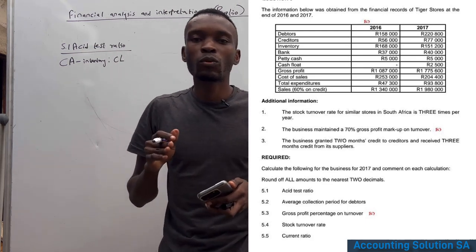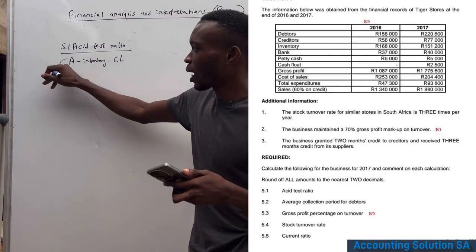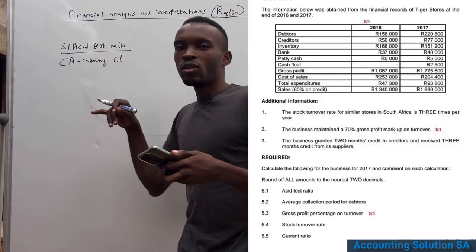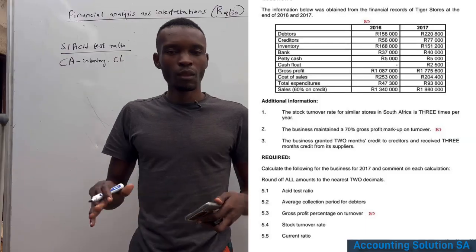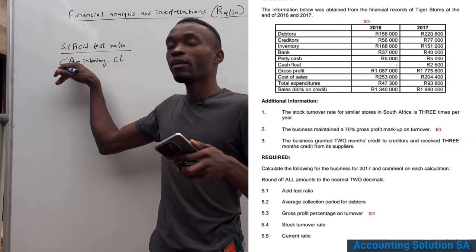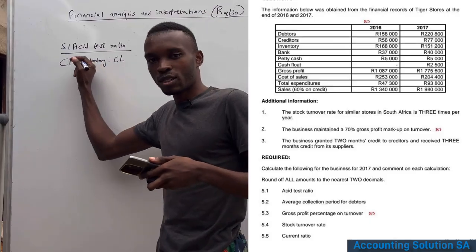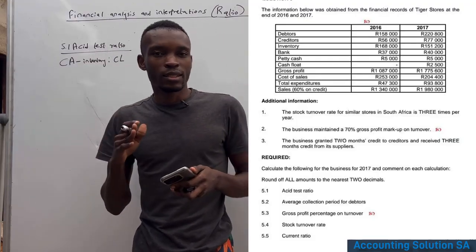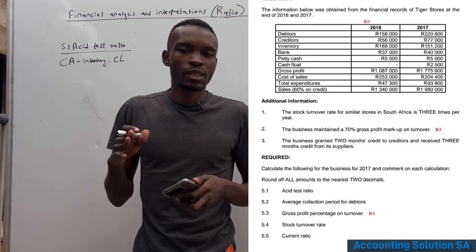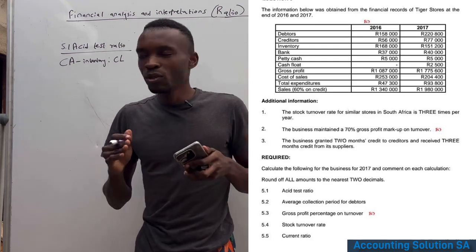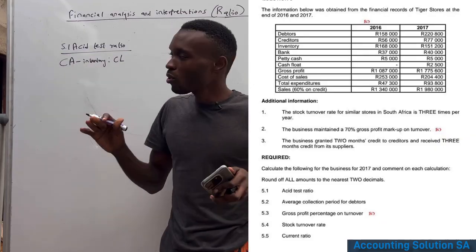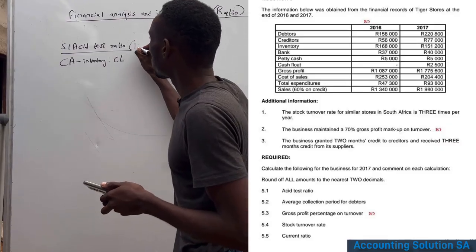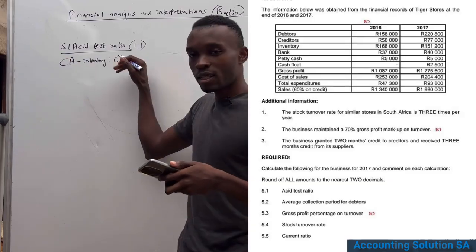The acid test ratio shows whether the company can pay its short-term liabilities using current assets excluding inventory. Inventory is excluded because it may not be easily converted — for example, bread can expire. The benchmark for this ratio is 1:1, meaning assets must at least equal liabilities.